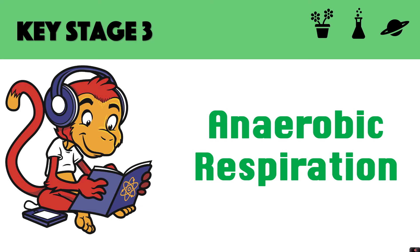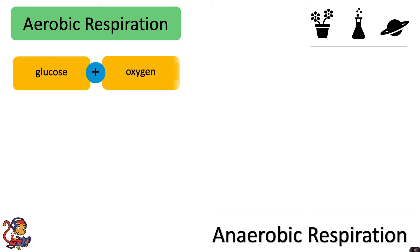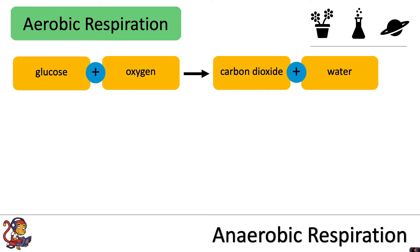In this video we're going to look at anaerobic respiration. We've looked at one type of respiration before called aerobic respiration, and in aerobic respiration glucose and oxygen react together to produce carbon dioxide and water. The whole point of respiration is to release energy, so often you will see 'plus energy' written in brackets at the end of the equation as well.